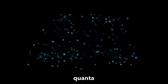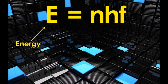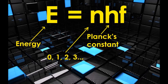Formally, the assumption that he made can be expressed with this equation: E equals NHF. Energy equals some integer, times some constant that would later come to be named after Planck,